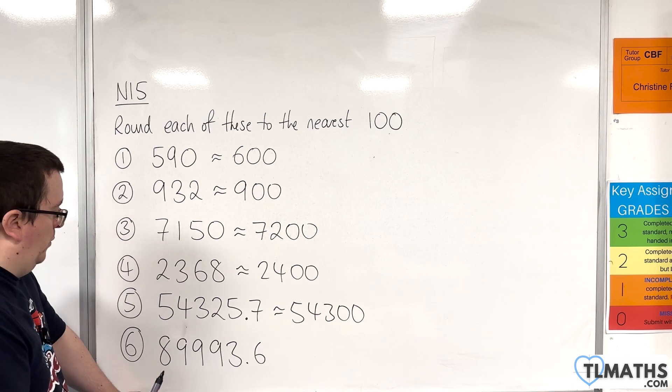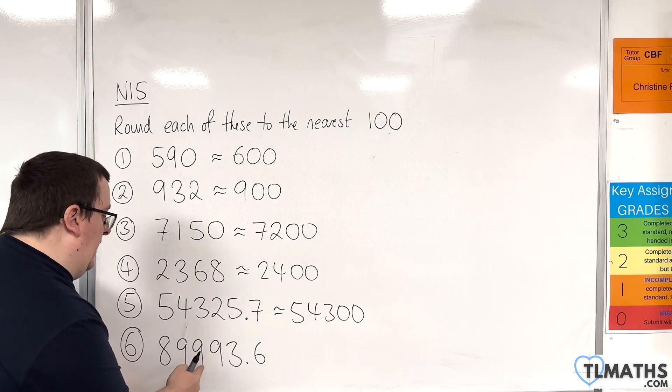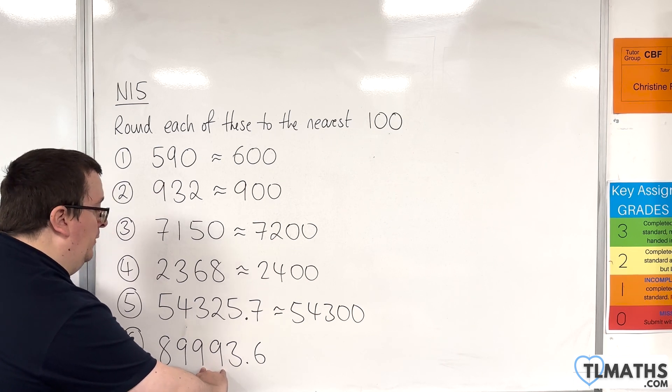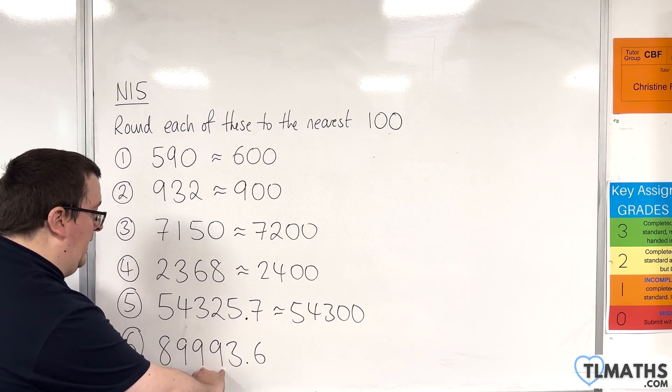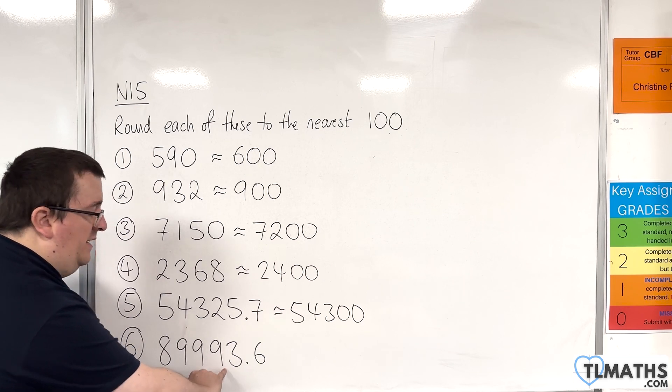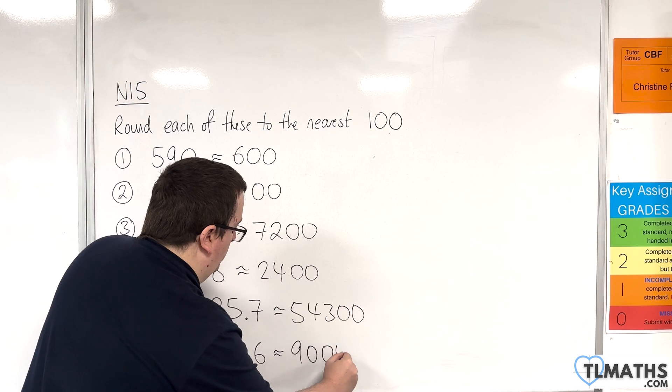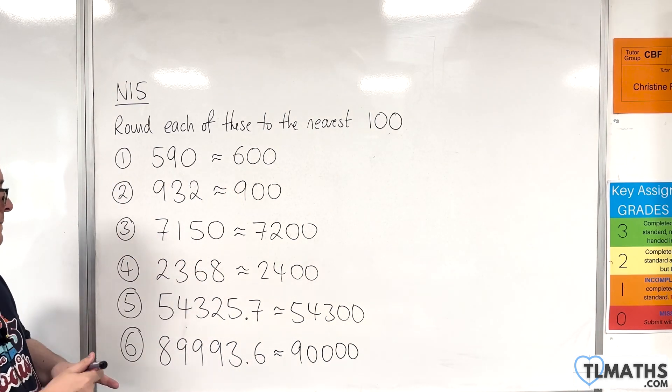Now the last one, the hundreds column is here, one to the right is 9, so it's 5 or more, so we round this up. So what would the next 100 be? Well, that would be 90,000. So that's 90,000 to the nearest 100.